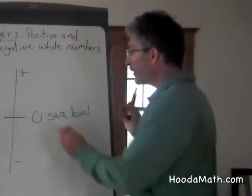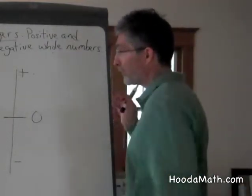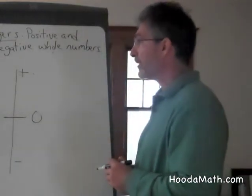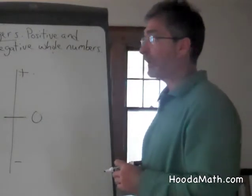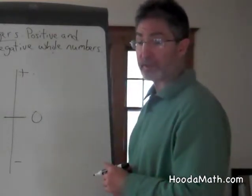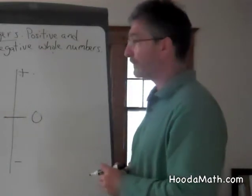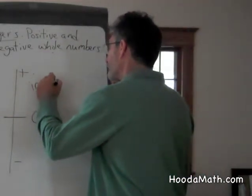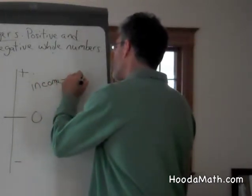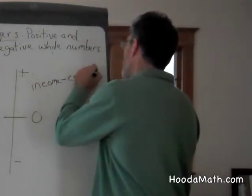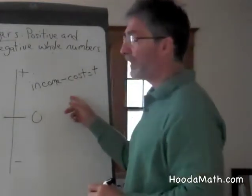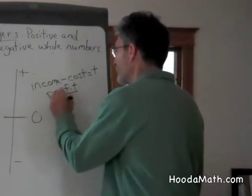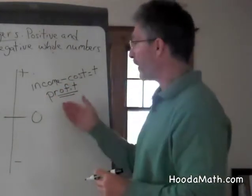A third use of zero, positive and negative, is used in business all the time. Businesses have costs and businesses have income. When the income minus the cost is a positive number, we have profit. Businesses like that. People who own businesses want profit.